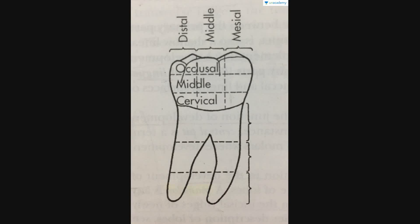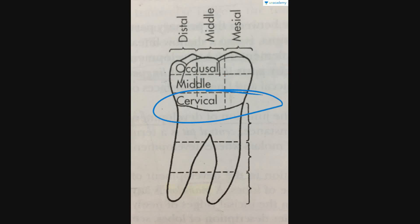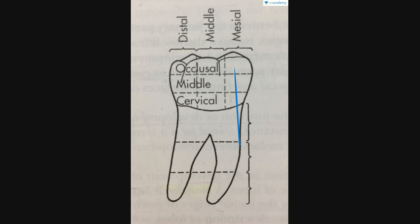For the occlusal or buccal posterior teeth, you can see how the crown is divided. This is your occlusal surface, because this is a posterior tooth. Previously in anterior teeth you saw an incisal ridge; here it is an occlusal surface. Then comes the middle and then the cervical. The root divisions are the same — the only change is the presence of an occlusal surface. Again, the tooth is divided into distal, middle, and mesial surfaces.